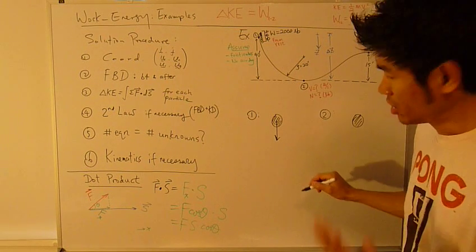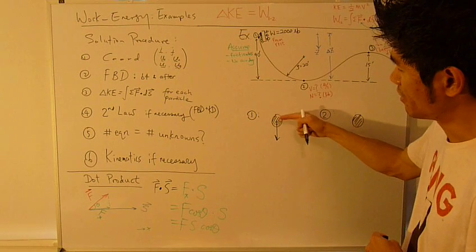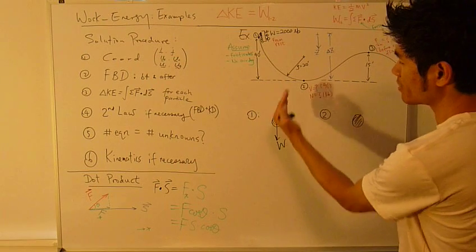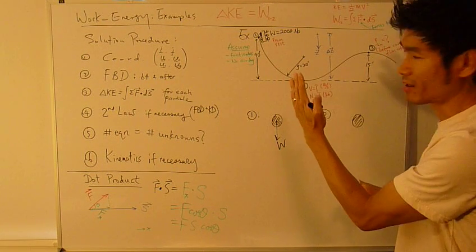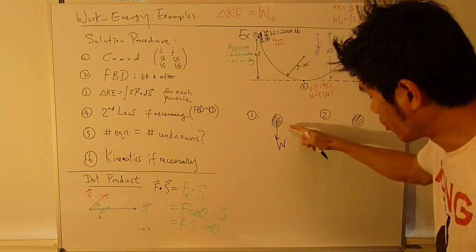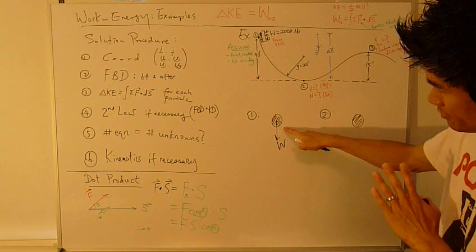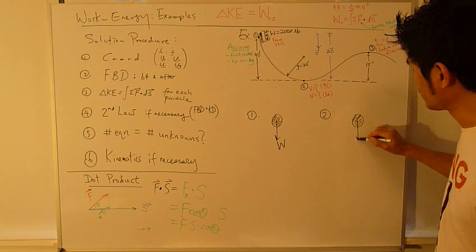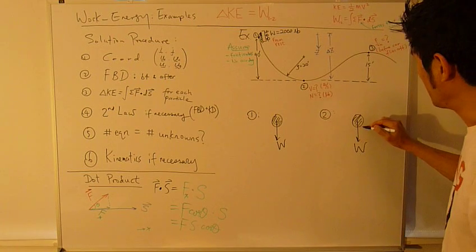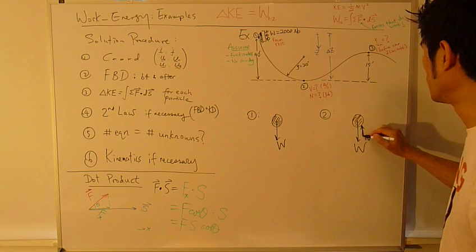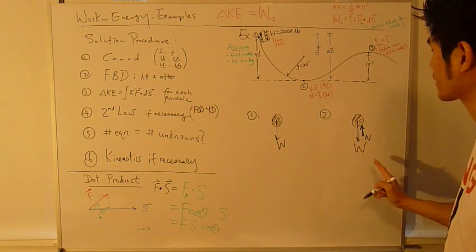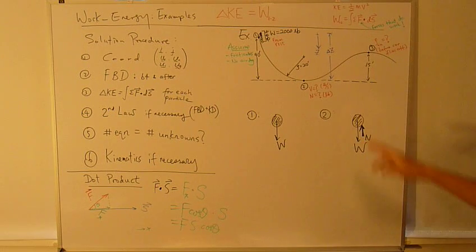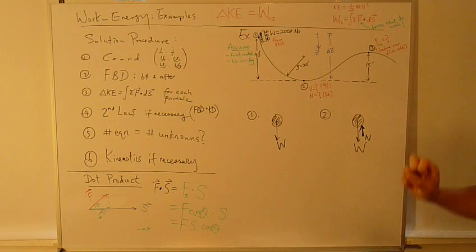I'm going to draw the force and all the forces acting on this object. In this case, I only have weight at position 1. I'm going to assume that it's starting from the vertical track. So the only force that appears here is weight. At position 2, down here, I have weight, but I also have normal force pointing up from the track, acting up onto the car. And that's it.